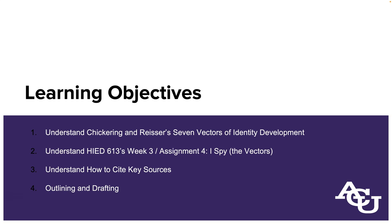We're going to start with a review of Chickering and Reiser's Seven Vectors of Identity Development. We'll review those before we talk specifically about the Higher Education 613 Week 3 Assignment 4, 'I Spy the Vectors,' where you do a film analysis using these vectors, using the film as a sort of case study to illustrate the principles of the vectors and demonstrate your understanding. We'll finish by talking about key sources and then outlining and drafting.